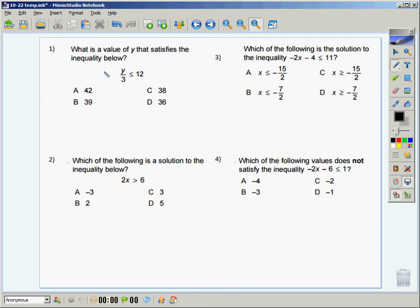Number one, you would have multiplied both sides by three, and you'd have had y is less than or equal to 36. The only one that's less than or equal to 36 is D. And number two, you would have divided both sides by two. X would have had to have been greater than three. The only one that's greater than three is D.